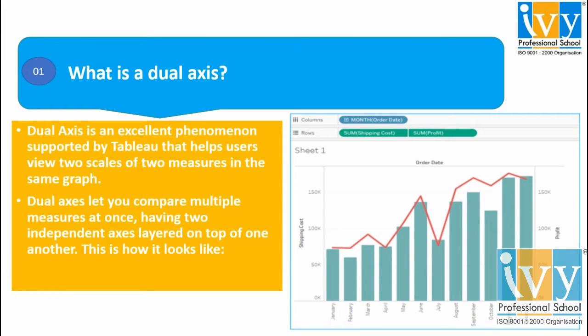With dual axis, we can compare multiple measures at once, having two independent axes layered on top of one another. As you can see in the graph, we have shipping cost on the left y-axis and profit on the right-hand side. We are able to compare two measures at once. That is the concept of dual axis.